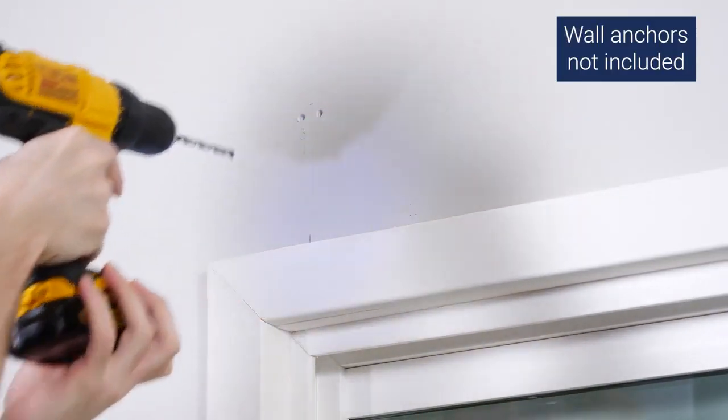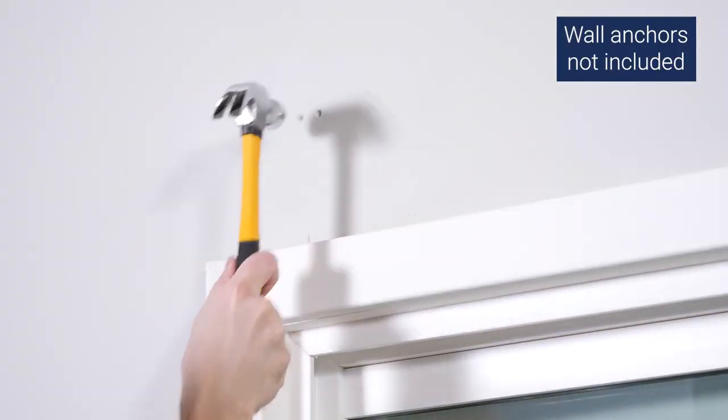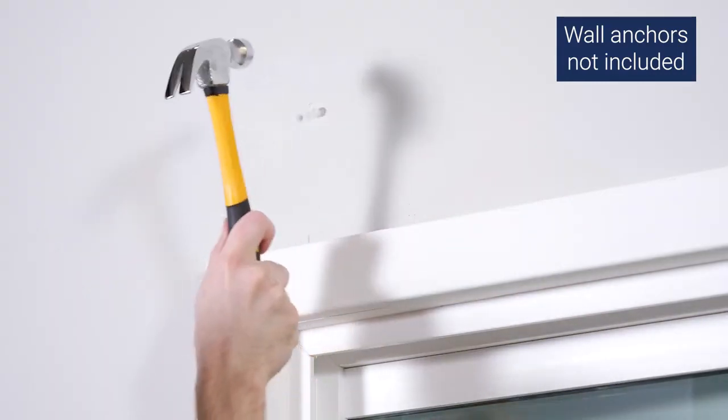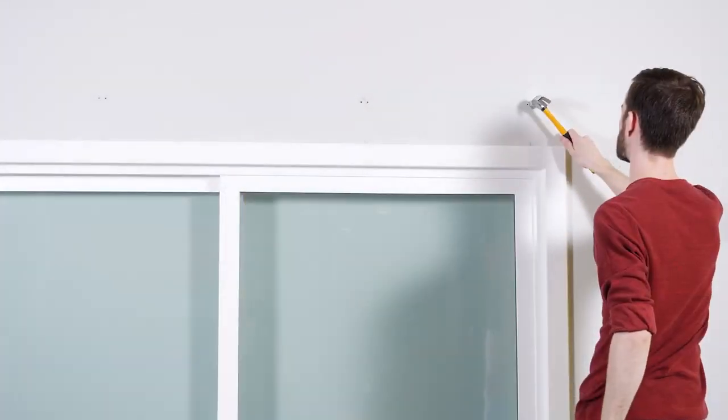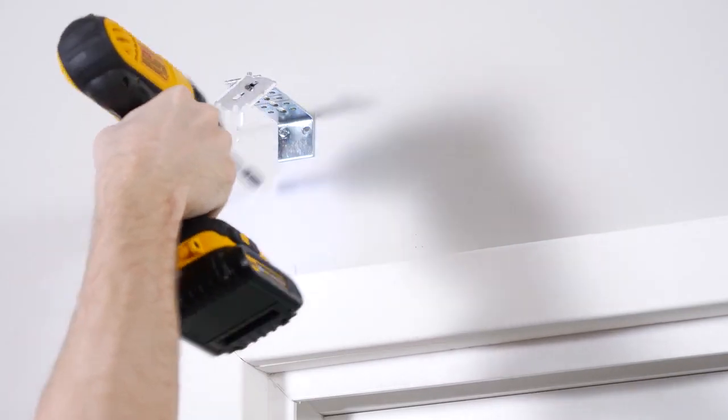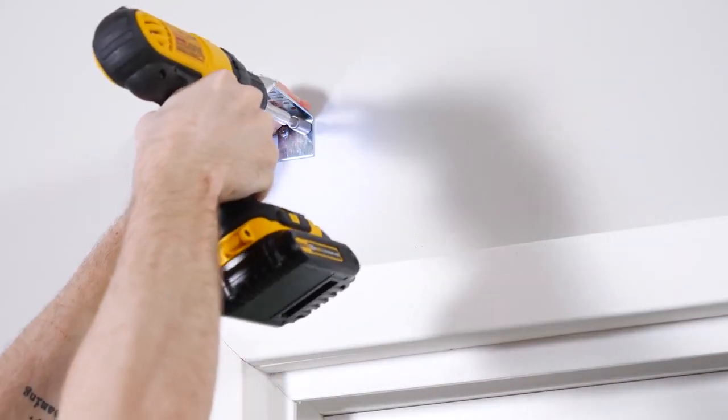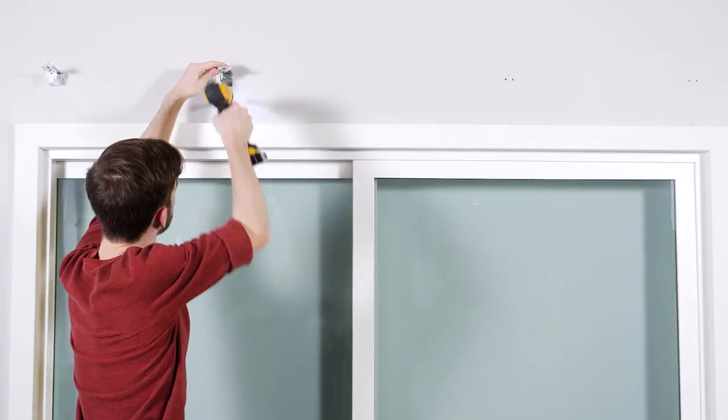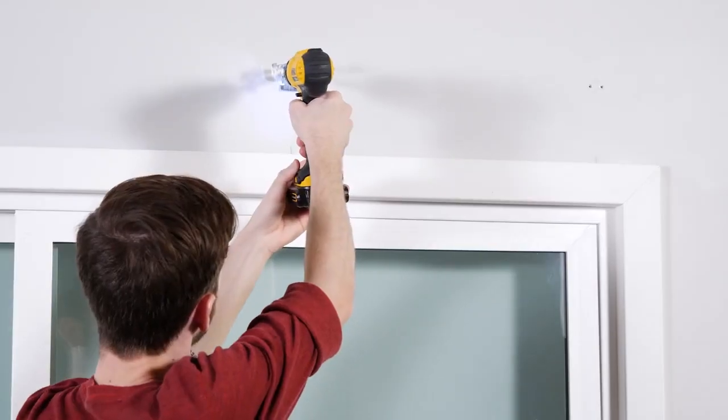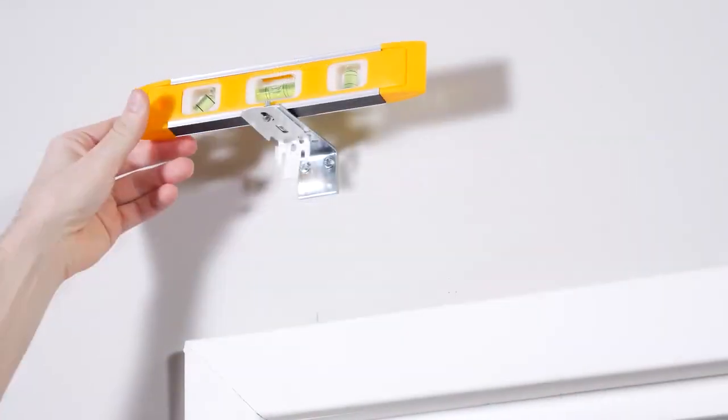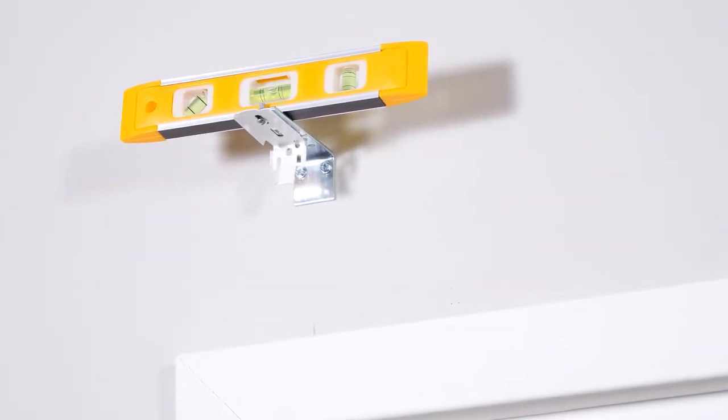If you're mounting the brackets to a hollow surface like ours, create screw holes with a large drill bit. Use a hammer to tap a wall anchor into each screw hole. Then line up each bracket with the holes and insert the screws. When all the brackets are installed, use a level to make sure they are all straight and aligned.